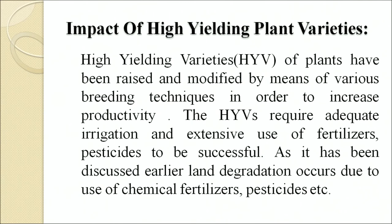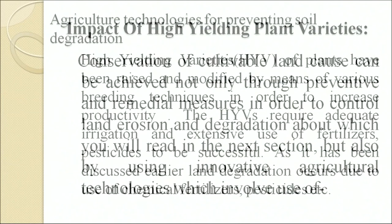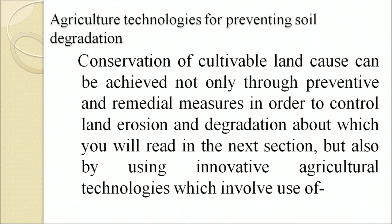High-yielding varieties (HYVs) of plants have been raised and modified by means of various breeding techniques in order to increase productivity. HYVs require adequate irrigation and extensive use of fertilizers and pesticides to be successful. As discussed, land degradation occurs due to use of chemical fertilizers and pesticides.